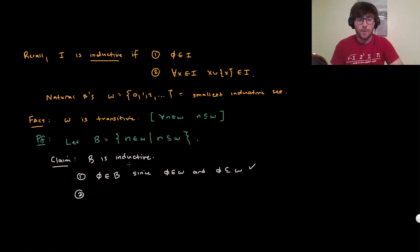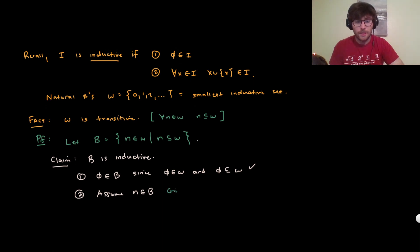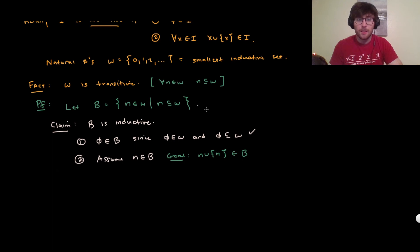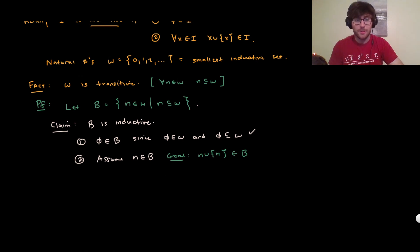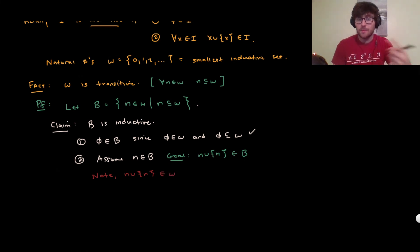What about the next condition? Assume that we have some element n of B. Our goal is to show that n union the set containing n is also something inside of B. To be in B we just need to show it's a subset of omega. Note that n ∪ {n} is in omega, because n is in B, so n is in omega by definition, and since omega is inductive, we can add 1 to n and get something that's also in omega.